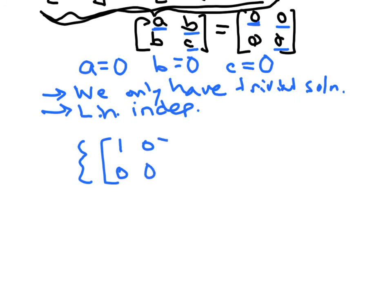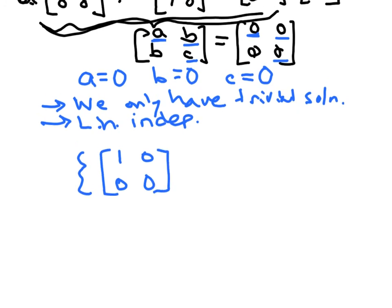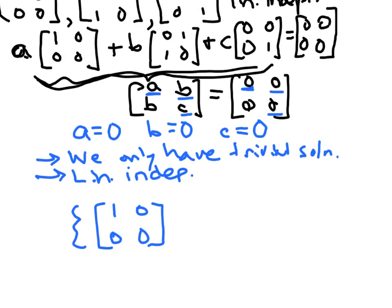which let me slide this so you can see where that's coming from. So these vectors will form a basis for W, and so W has dimension three.